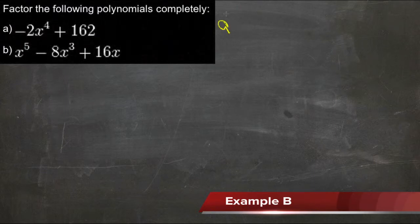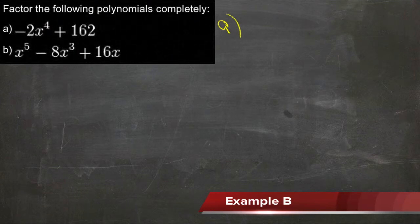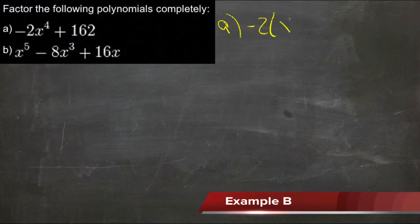We have, for a, looks like we can pull out a 2, or a negative 2, actually, right away. So we'll have negative 2 times x to the 4th minus 81.